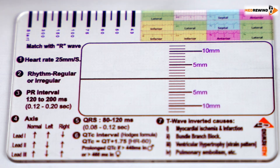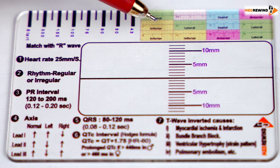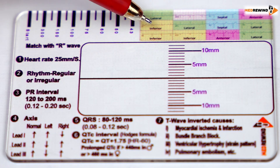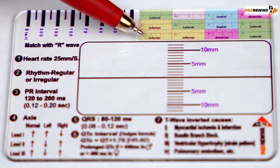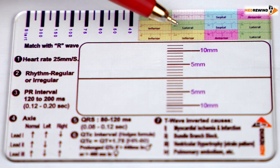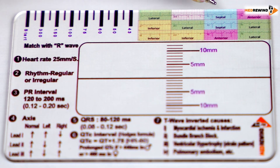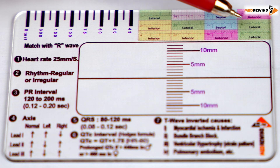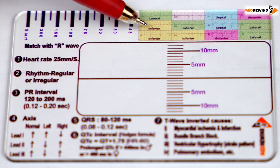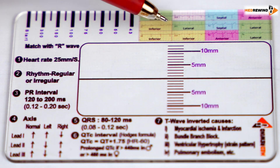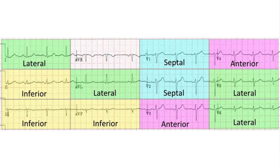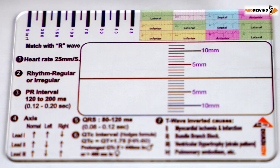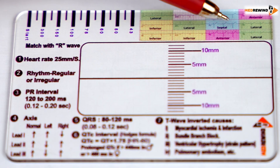This colorful part will tell us which leads are involved, and based on that we can see which wall of the myocardial infarction it is. The leads are: 1, 2, 3, AVR, AVL, AVF, and V1 through V6. If inferior leads 2, 3, AVF are involved, it is inferior wall. If leads 1, AVL, V5, V6 are involved, it is lateral wall. Septal wall involves V1 and V2, and anterior wall involves V3 and V4.